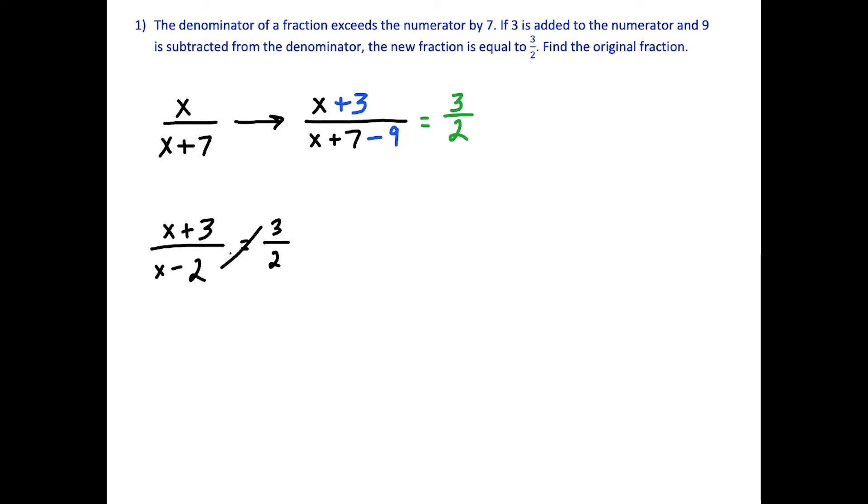To solve this equation, we're just going to cross multiply. We have 3 parentheses x minus 2, because we're multiplying, we have to distribute is equal to 2 parentheses x plus 3. So then when we simplify here, we're going to have 3x minus 6 is equal to 2x plus 6, which is the result of us distributing the 2 through this set of parentheses.